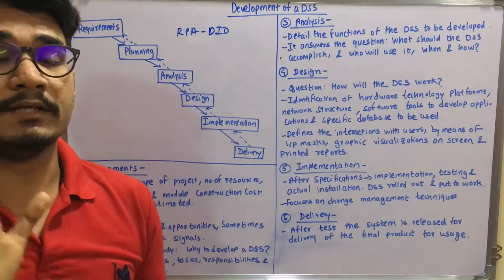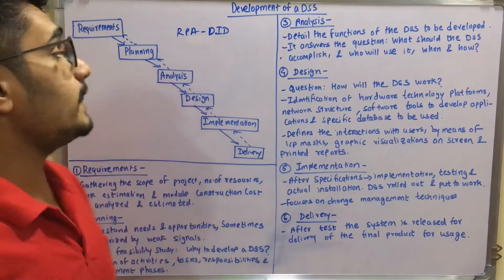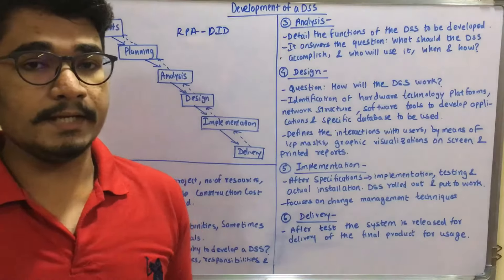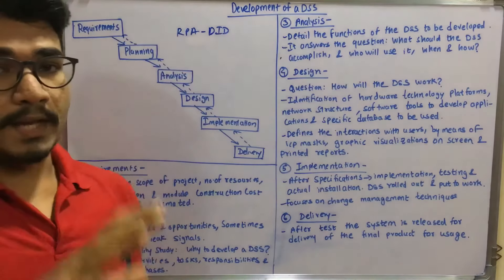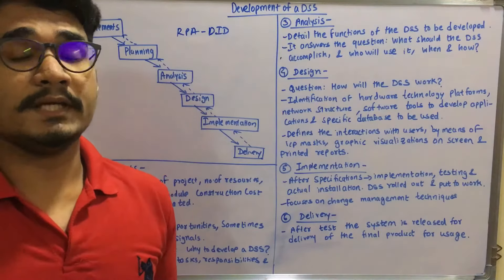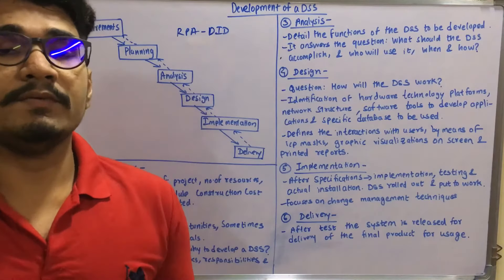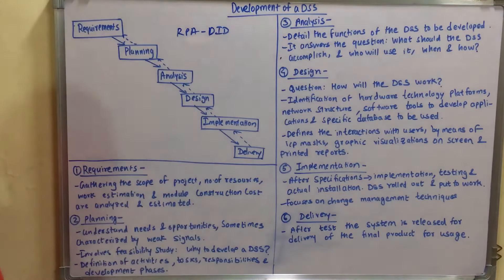For remembering purposes, I have made this keyword: RPADID — that is Requirement, then Planning, Analysis, Design, Implementation, and finally you have to Deliver the product or deliver the DSS system.